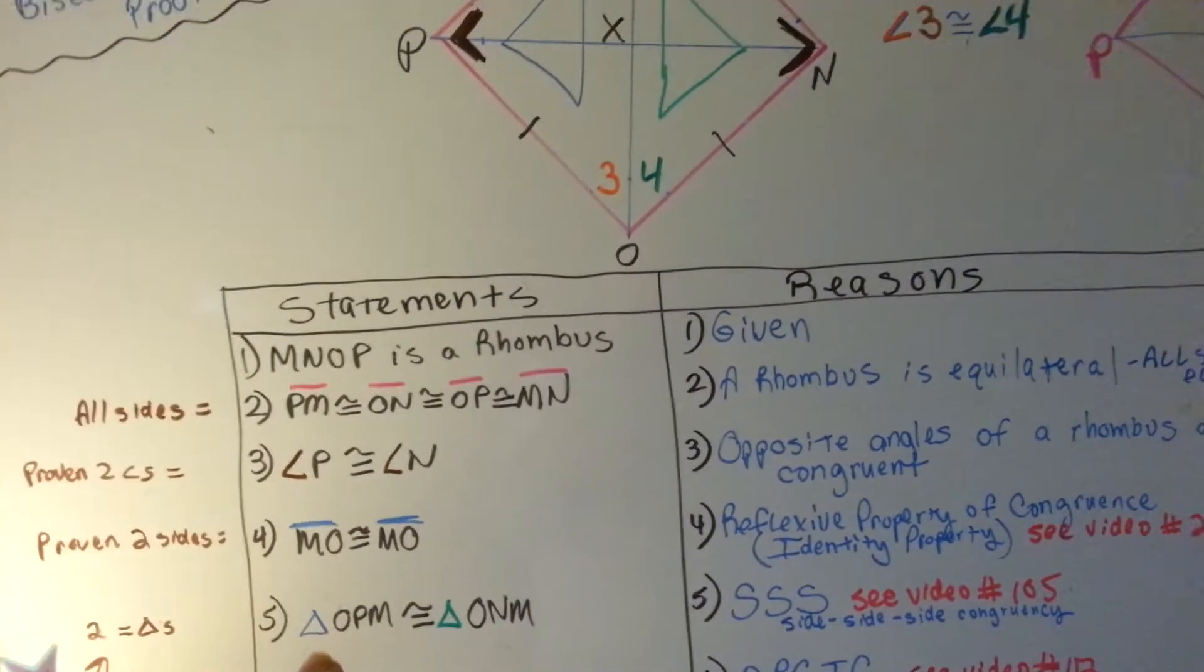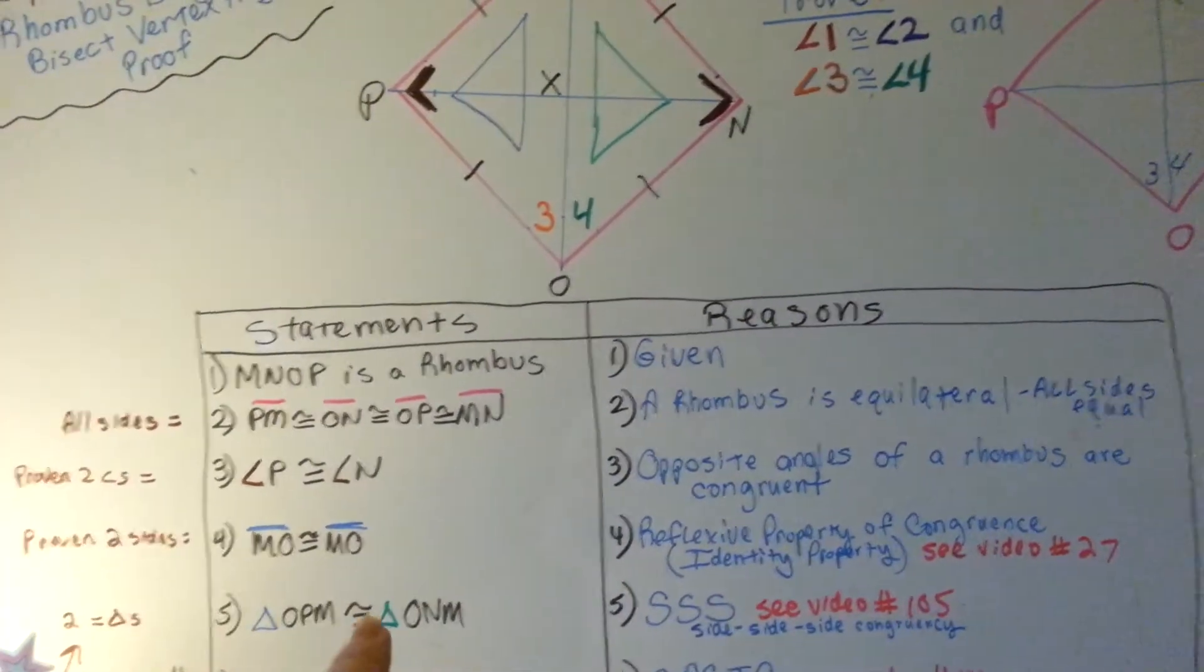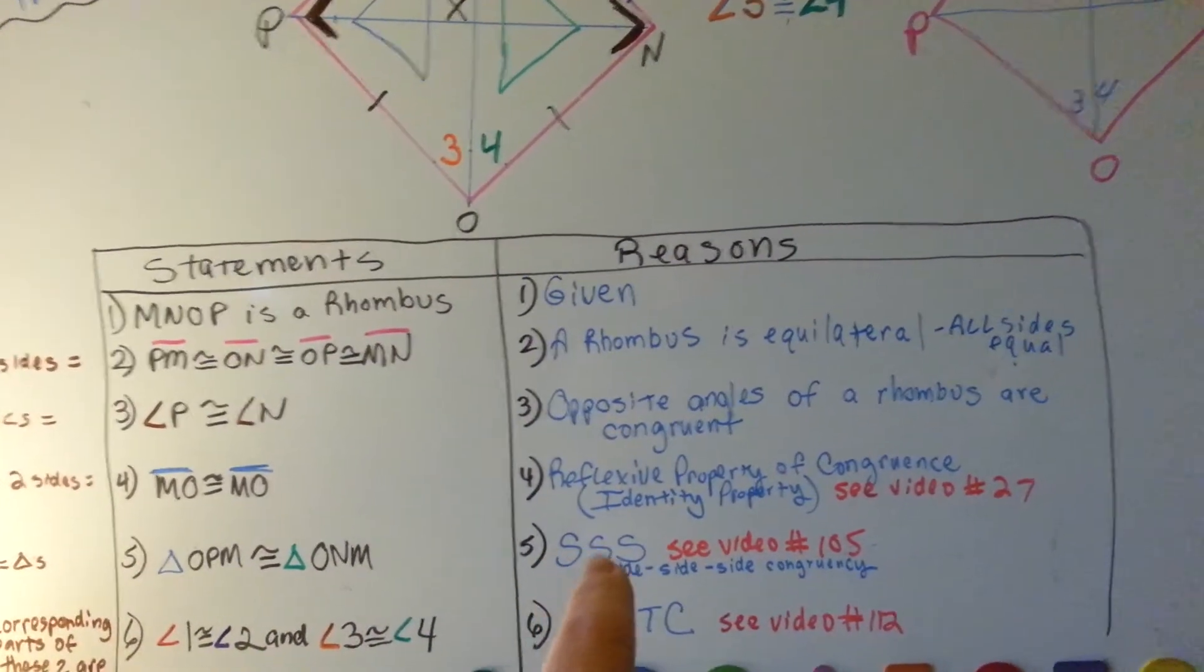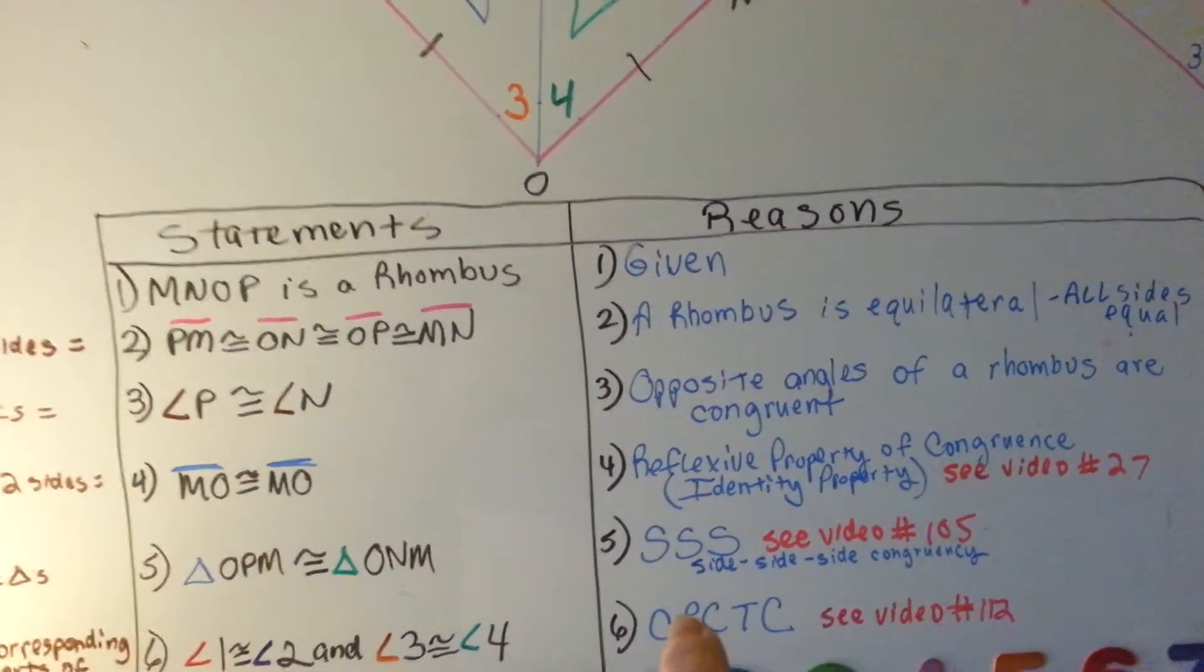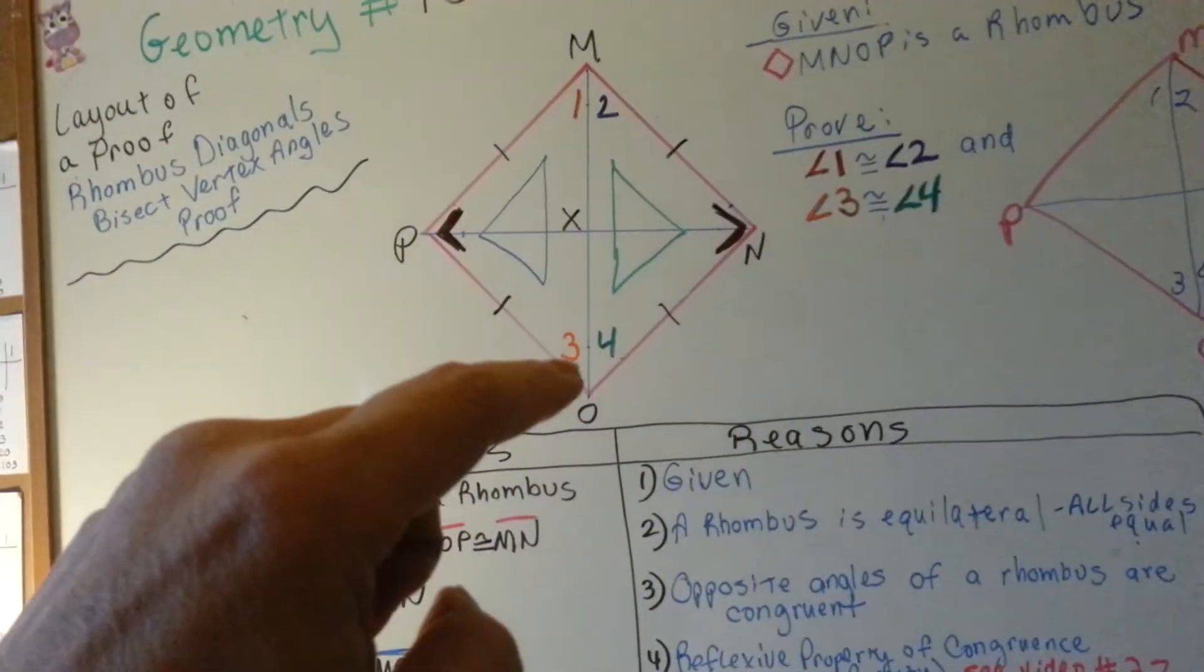Now we're going to say that the blue triangle O-P-M right here is congruent to the green one O-N-M, and our reasoning is side-side-side. That's video number 105 and explains it very clearly. We've got three sides that are congruent.